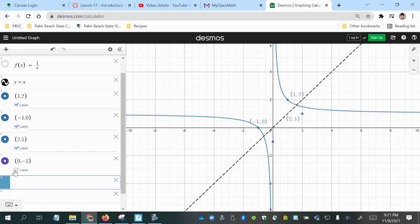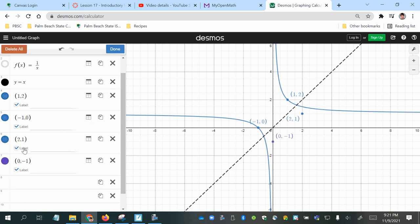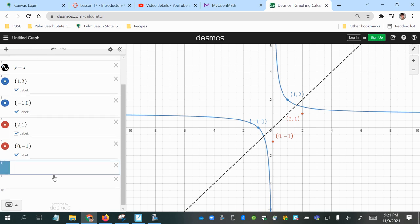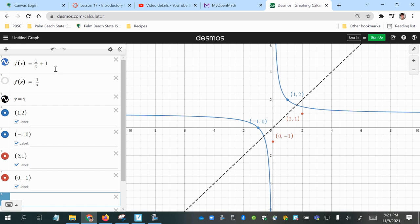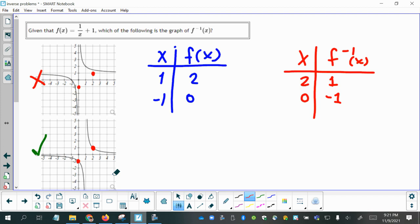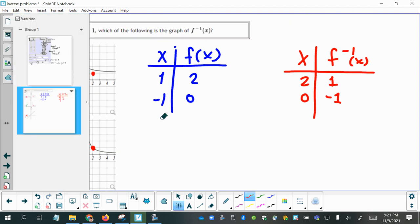So now we have these two points that would be on the inverse function. Let's make the inverse red. And now I'm going to review also how you can graph, you know, create the equation of a reciprocal function. So that I can graph it and show it to you.